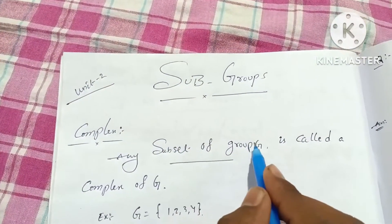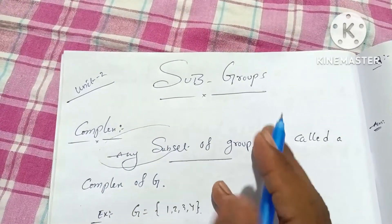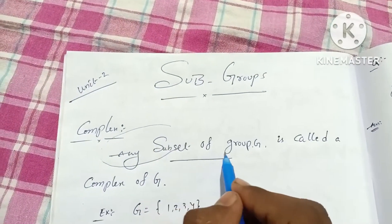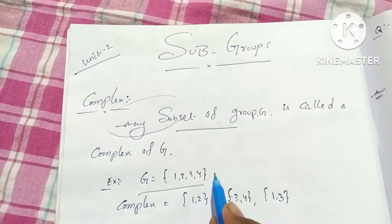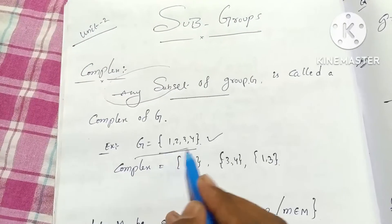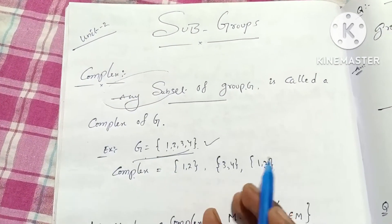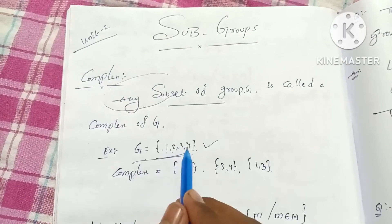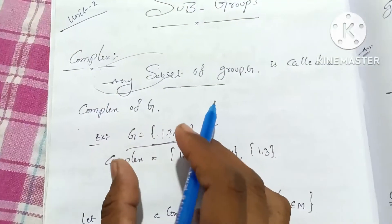Any subset of a group G is called a complex of G. So from a group G, you can get subsets such as {1,2}, {2,3}, {3,4}, {1,3} — each of these is a complex of the group G.